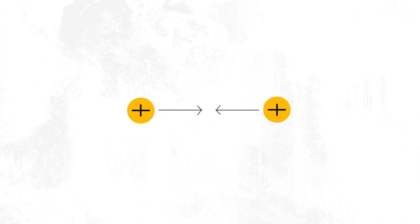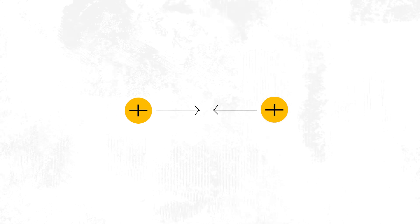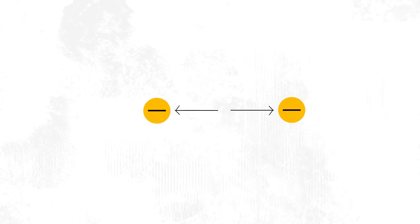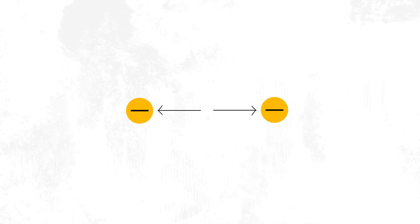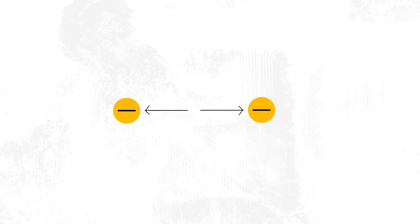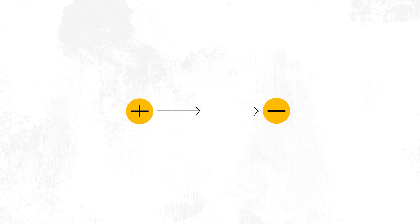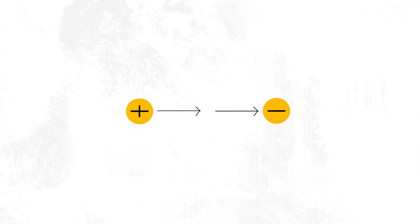For two positive charges, both charges have lines pushing each other, thus increasing the overall distance between the two charges. A similar thing happens when we try to join two negative charges — the converging forces increase the distance between the two points. For a paired positive and negative charge configuration, all lines or forces move in the same direction, which reduces the overall distance between the two charges.